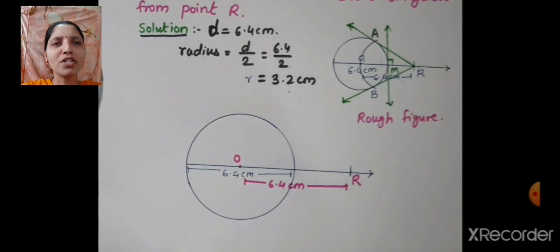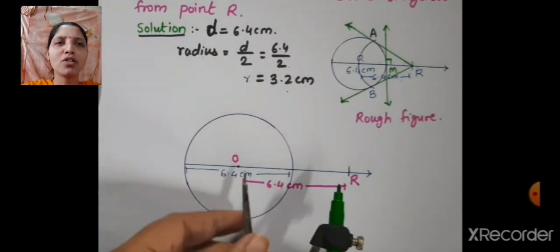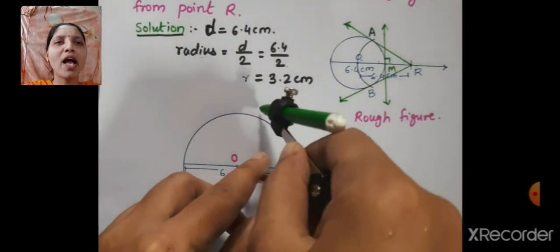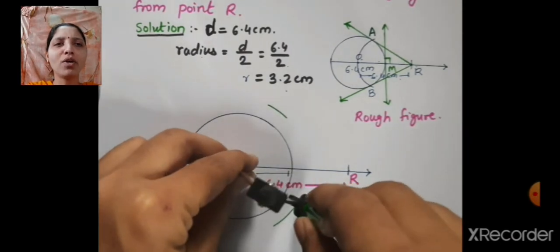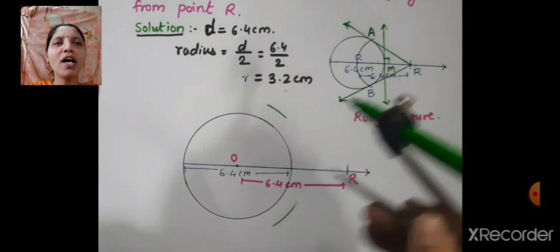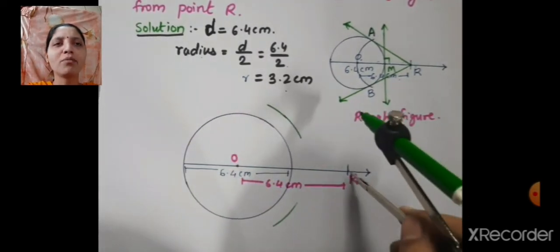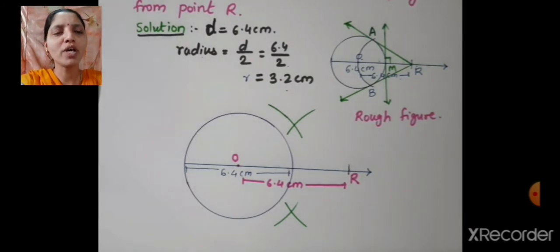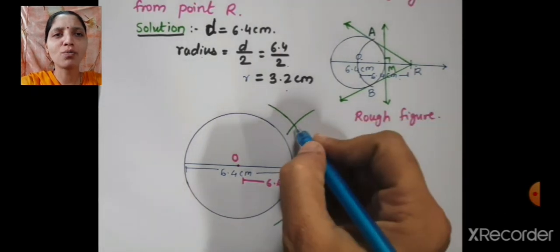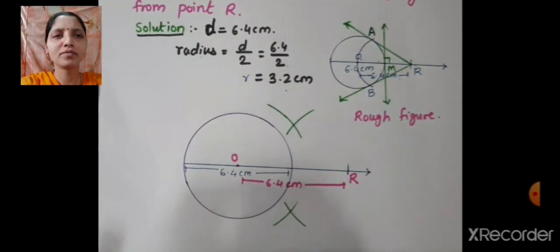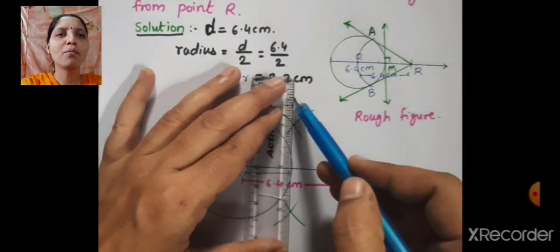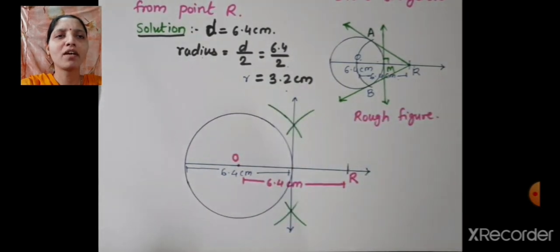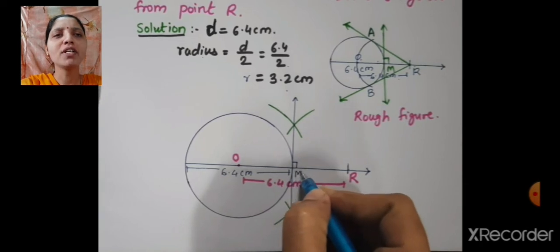Now, what is the next step? You have to draw the tangents. For that you have to find the midpoint. Take more than half the distance of OR and put the pointer on point O and draw an arc above OR and below OR. Then put the pointer on point R and draw one intersecting arc above and one intersecting arc below. This way you will get 2 points. Highlight those points and with the help of a scale, draw a perpendicular bisector. This perpendicular bisector cuts segment OR at one point — that point is point M.